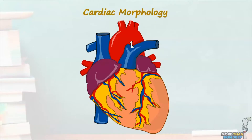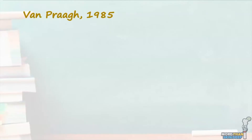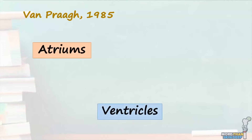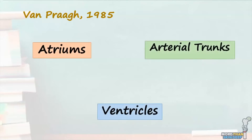My name's Aisha and welcome to Anatomy 101. The first approach used to describe cardiac morphology was introduced by the internationally recognized paediatric cardiologist Richard van Praag in 1985. He proposed a segment-by-segment approach which categorizes the heart into three cardiac segments: the atria, the ventricles, and the arterial trunks.